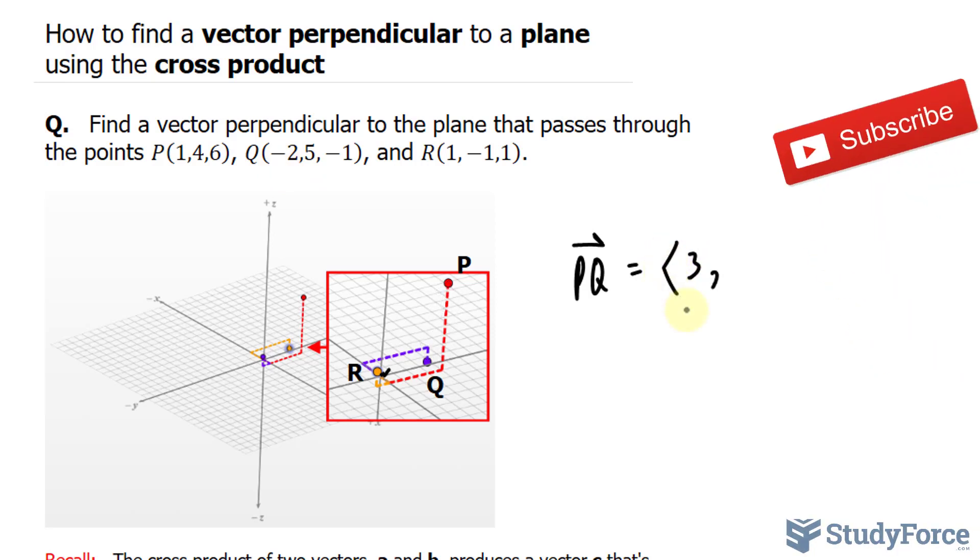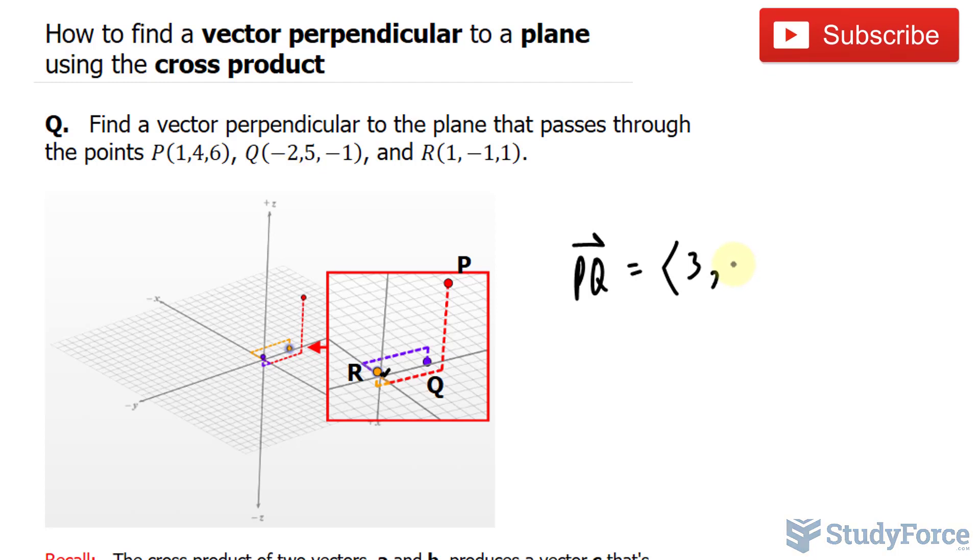That will be the X component of our vector. 4 minus 5 is negative 1. And 6 minus negative 1 is 7.